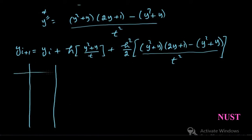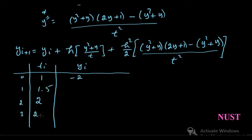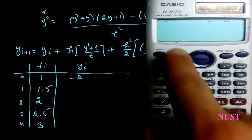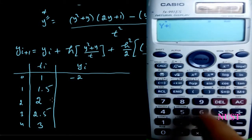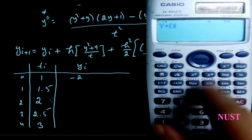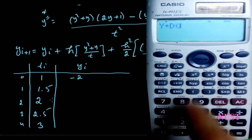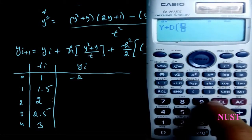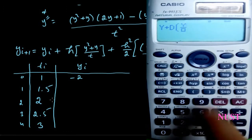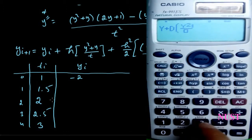So for this, let's draw a table and write all the points in a sequence. Now using the calculator, type the governing equation. Replace t by x and h by d.